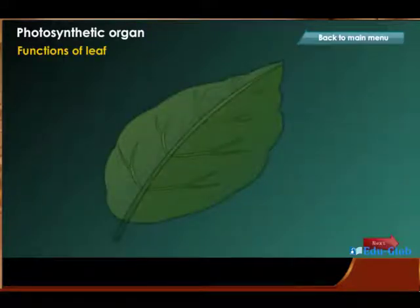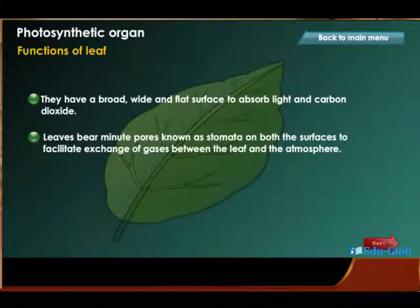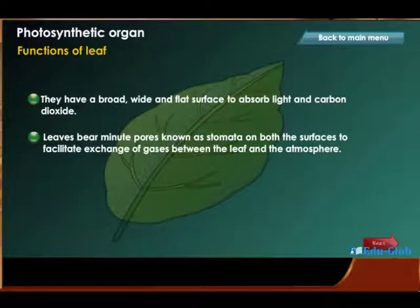Functions of the leaf: They have a broad, wide, and flat surface to absorb light and carbon dioxide. Leaves bear minute pores known as stomata on both surfaces to facilitate exchange of gases between the leaf and the atmosphere.